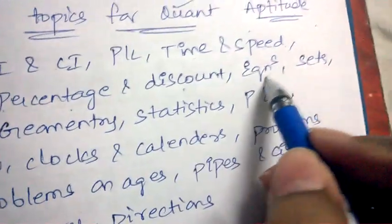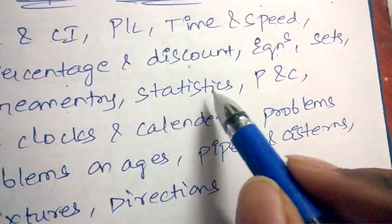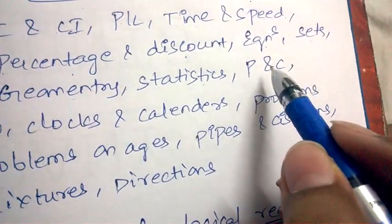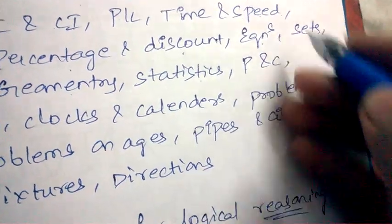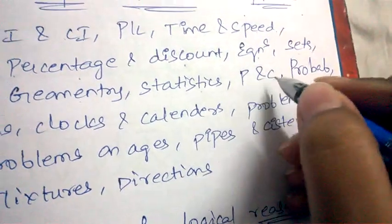Next are discounts, equations, sets and relations, mensuration, geometry, statistics, probability (which is very important), and permutations and combinations.